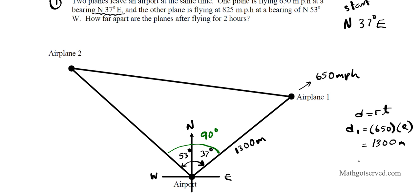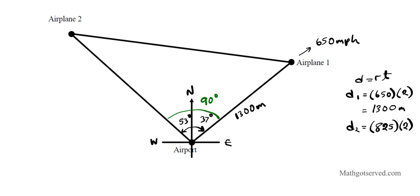For plane 2, using the same formula, D2 equals the rate of plane 2 times the time it travels. The rate of plane 2 is 825 miles per hour, multiplied by 2 hours, which gives us 1650 miles as the distance traveled by the second plane. So now we need to find the distance of separation between these two. Let's label our triangle so we can assign a letter to this distance.